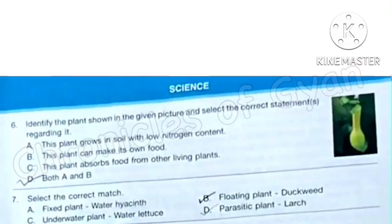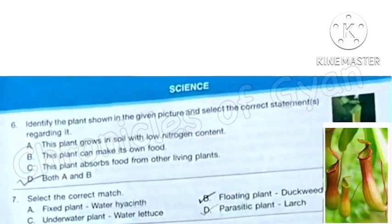Question 6: Identify the plant shown in the given picture and select the correct statement regarding it. This is a pitcher plant. For this, let's start with option A. This plant grows in soil with low nitrogen content. Yes, this is a correct statement.